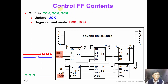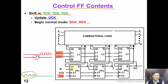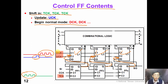On the other hand, if we want to control the flip-flop contents, we can do the following: first, shift in the test pattern we want by pulsing TCK. Then, we apply one update clock UCK to transfer the content into our functional flip-flop. In this way, we control the content in the upper row of flip-flops, and then we begin normal operation again by pulsing the data clock DCK. In this way, we can control the flip-flop contents in the middle of normal operation.